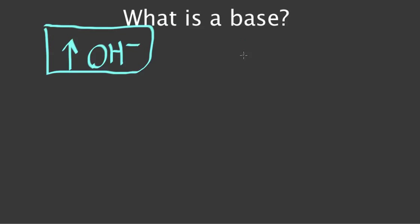Another property is that bases all have a pH of greater than 7. 7 is a neutral pH, and anything less than 7 is an acid. But if it has a pH of greater than 7, we would call it a base.